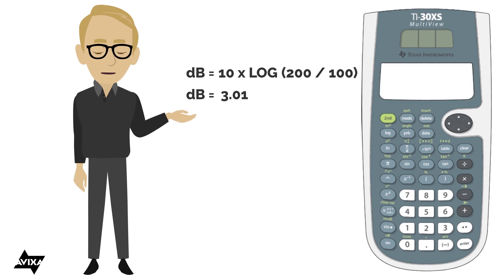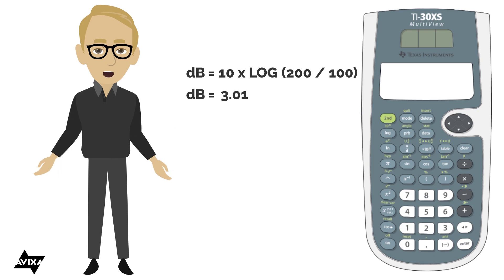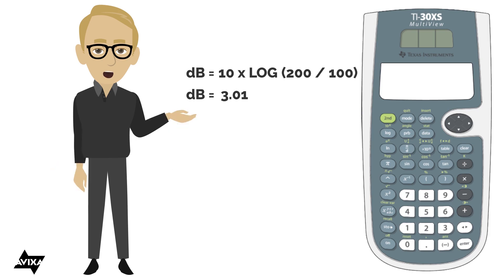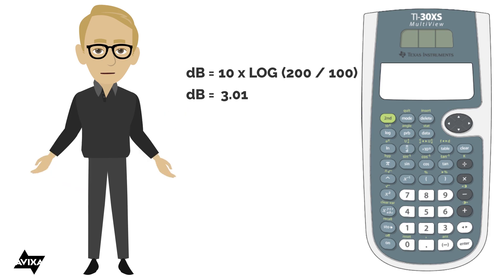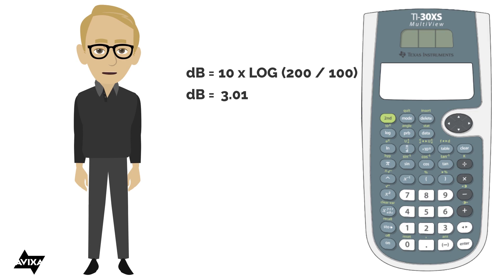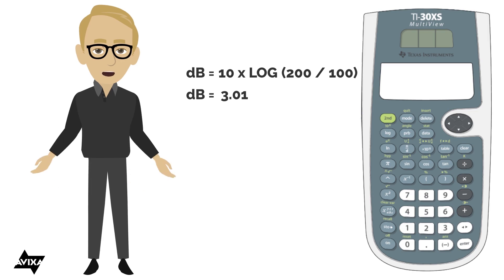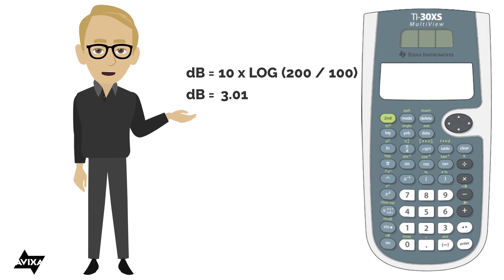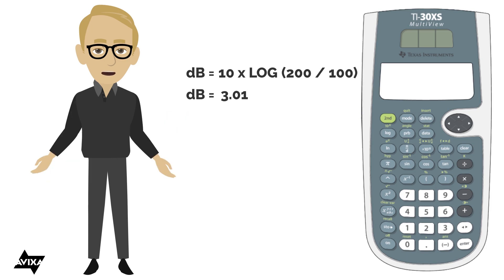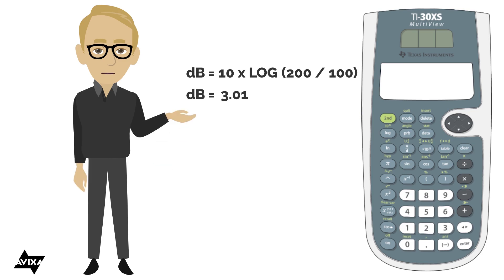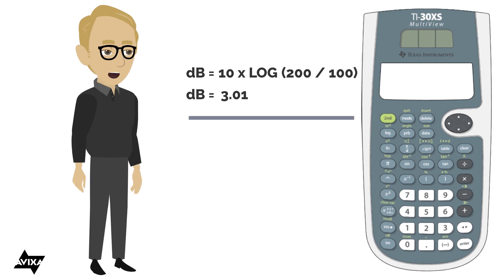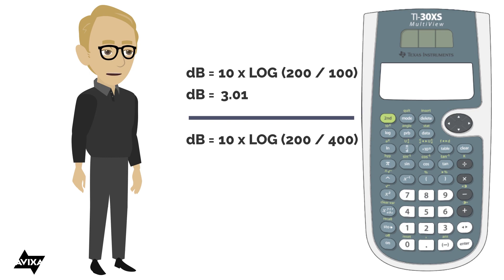Every time you double power or cut power in half, you expect a 3 dB change. Let's do a decrease — going from 400 watts down to 200 watts. I started with 400 and go to 200, so I expect a negative number, a decrease. When expecting a decrease, I put the smaller number first.